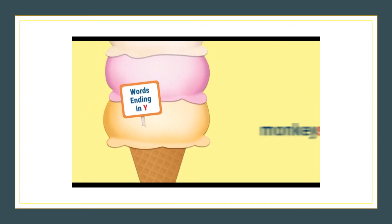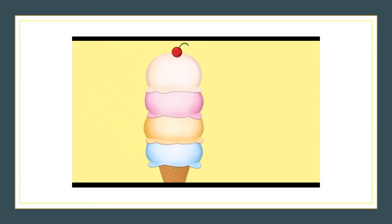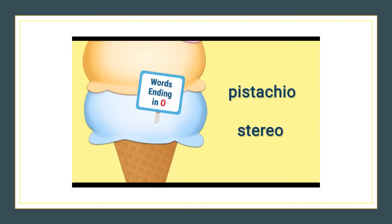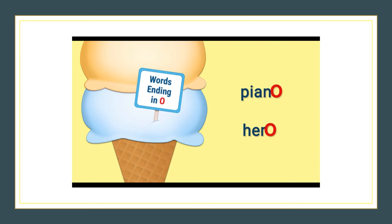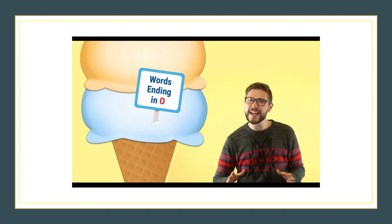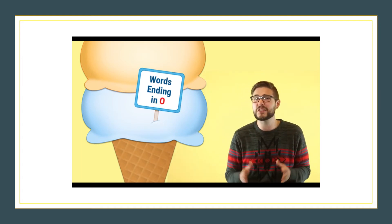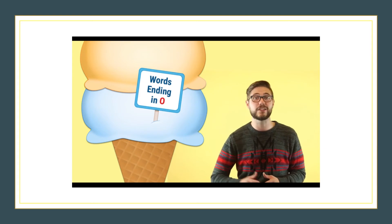Now here's the scoop on words that end in O. If the word ends in a vowel plus O, add S, as in pistachios or stereos. And if the word ends in a consonant plus O, add S, as in pianos, or ES, as in heroes. You may have to consult a dictionary because there's no solid guideline on this last one.